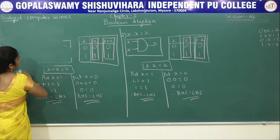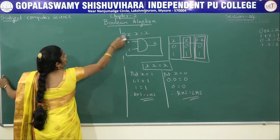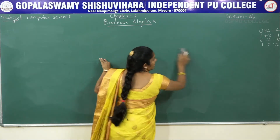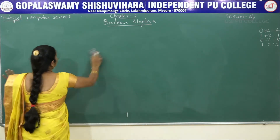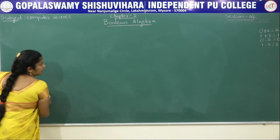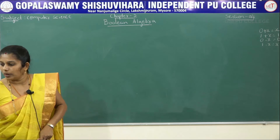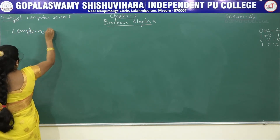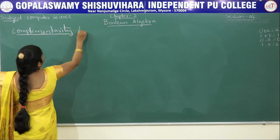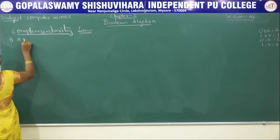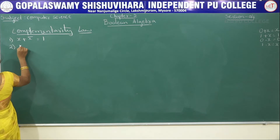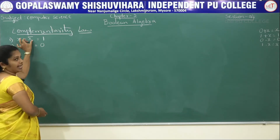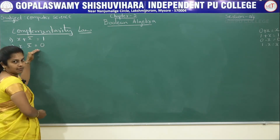Next, we will discuss complementarity law. To recap: in the law of addition, 0 plus x equals x and 1 plus x equals 1; in the law of multiplication, 0 into x equals 0 and 1 into x equals x. In complementarity law, there are two postulates: x plus x bar equals 1, and x into x bar equals 0.